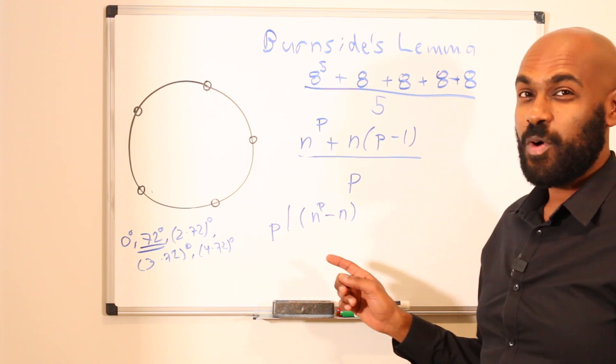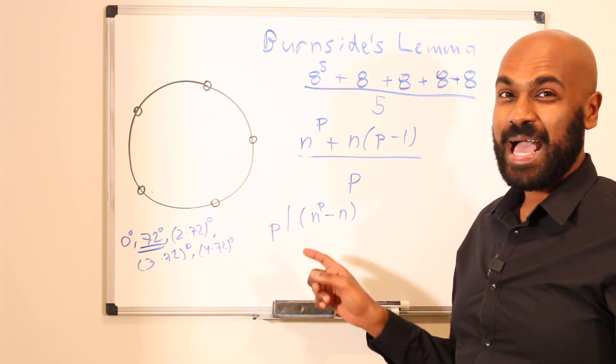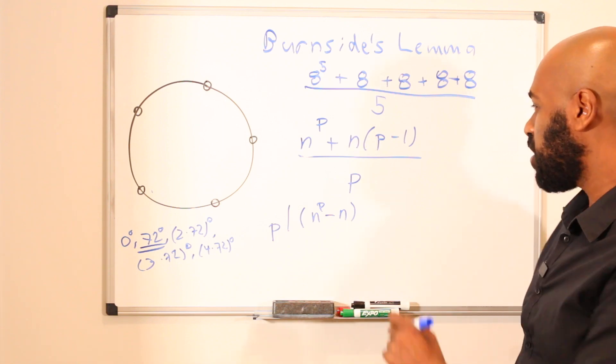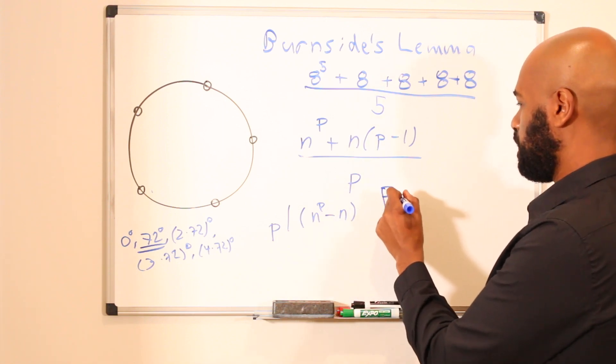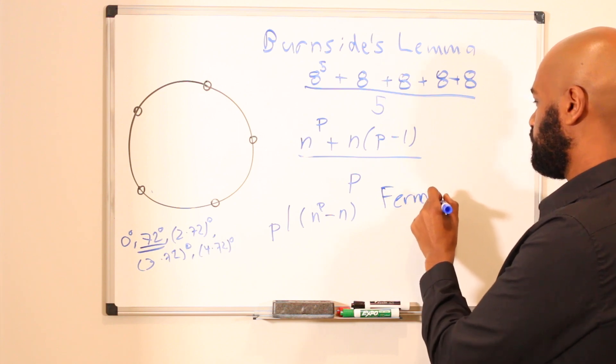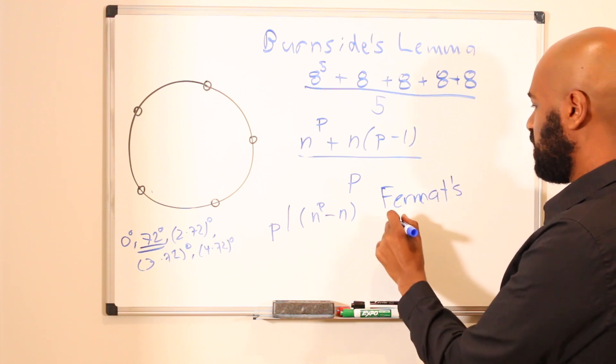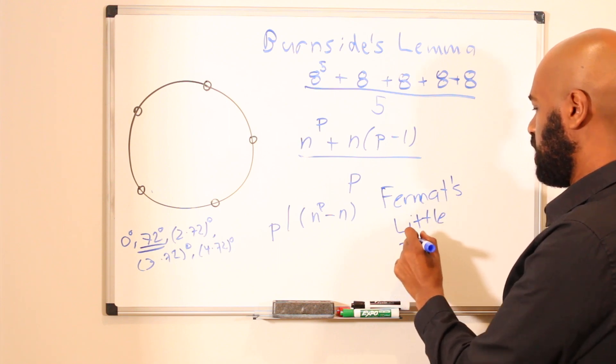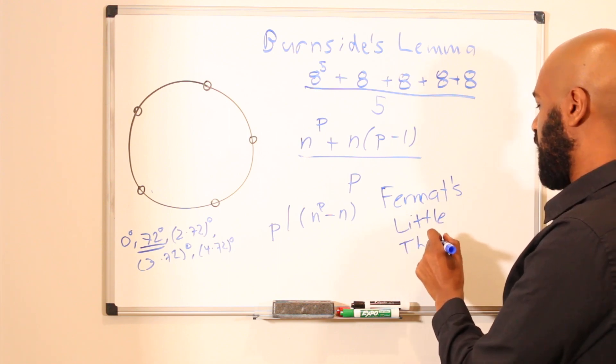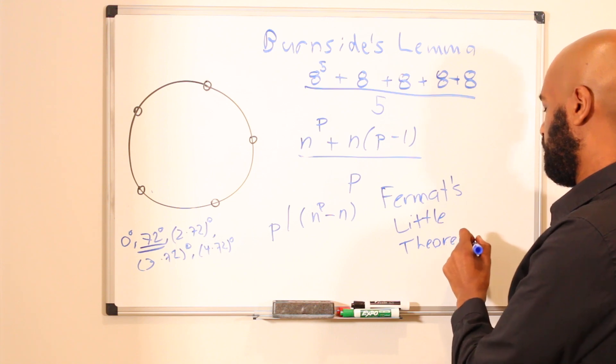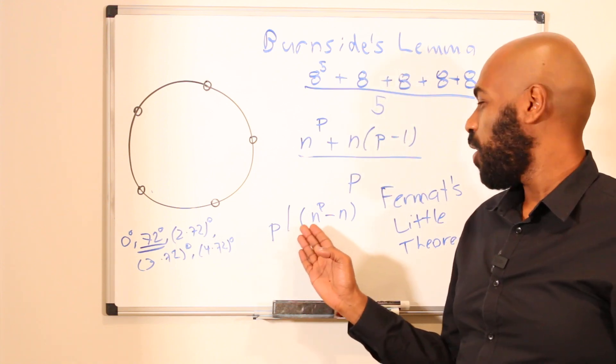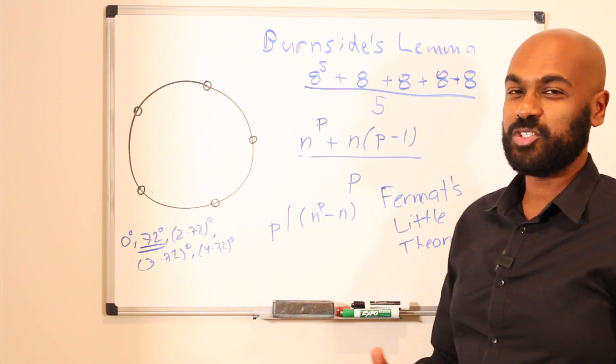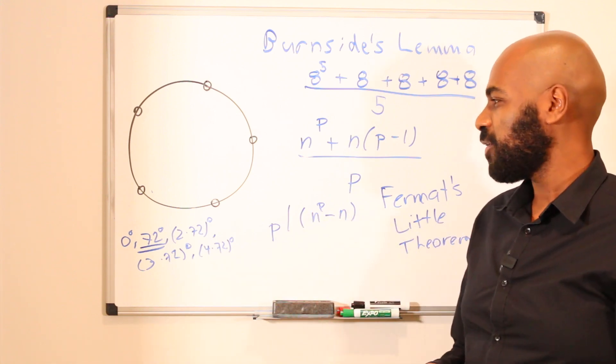Now this is kind of wild because this is a theorem that actually appears in a lot of number theory textbooks. It's called Fermat's Little Theorem. And it states that if you have a positive integer n and a prime number p, then p has to divide the quantity n to the p minus n. And usually it's proved using a bunch of modular arithmetic type calculations, but we were able to establish this completely from combinatorics.